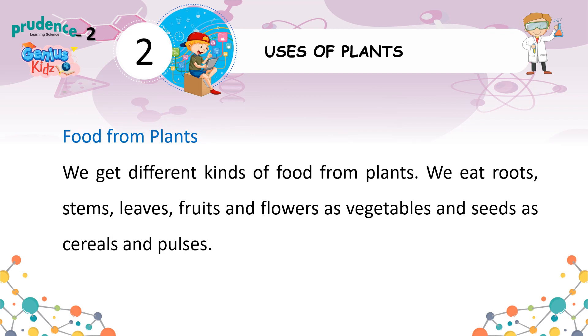Food from Plants: We get different kinds of food from plants. We eat roots, stems, leaves, fruits and flowers as vegetables, and seeds as cereals and pulses.